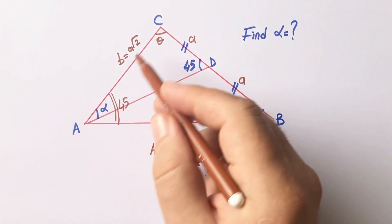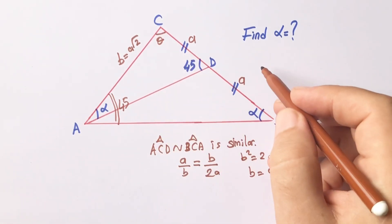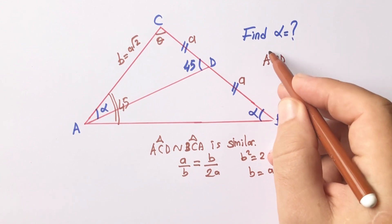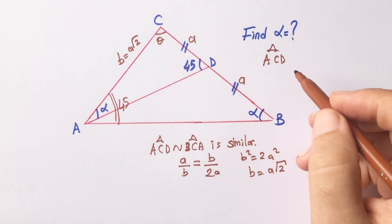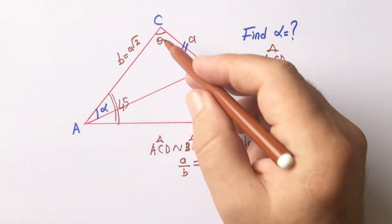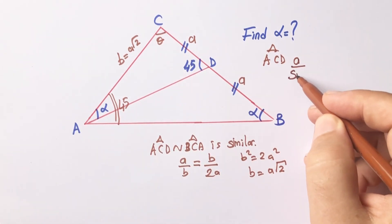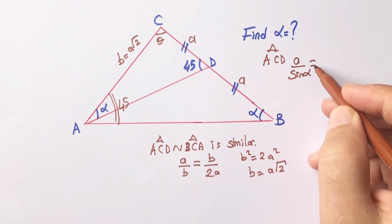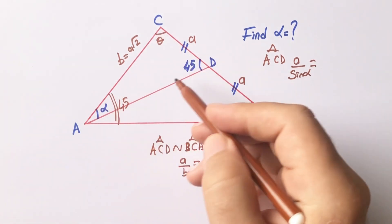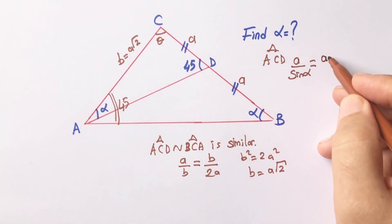In this triangle, if we apply sine theorem, we can get it. A over sine alpha equals A root 2 over sine 45 degrees.